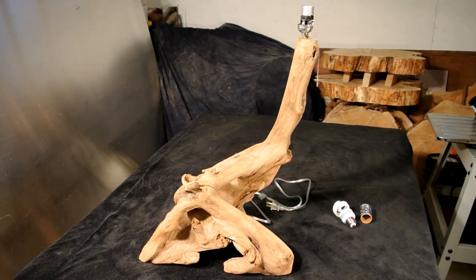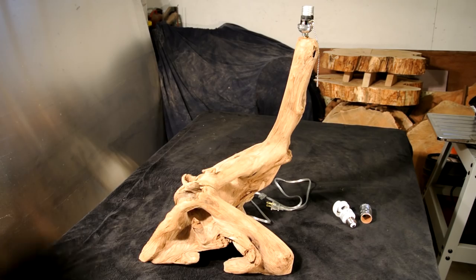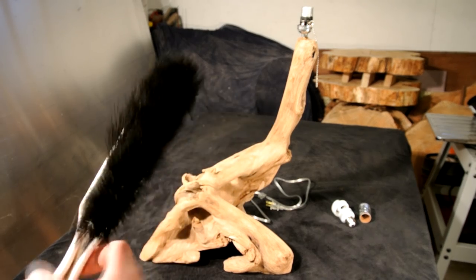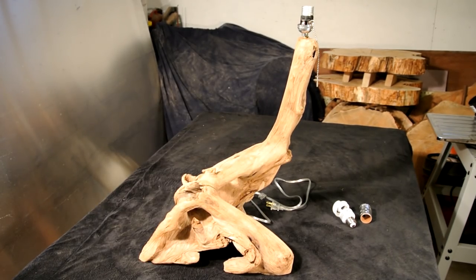Once you've decided on the piece of driftwood that you want to use to make a lamp, you're going to want to clean it. How I went about doing that is first I pressure washed everything down, and then I used a coarse brush just like this to clean it.